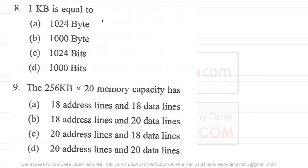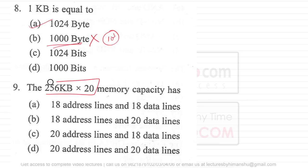Question eight asks what one kilobyte is equivalent to. The answer is 1024 bytes. Never mistake it as 1000 — in computer science, 'kilo' means 2 raised to power 10, not 10 raised to power 3. So the answer is option A: 1024 bytes.